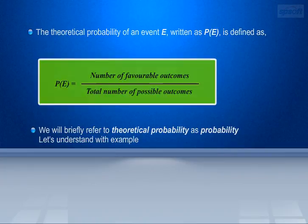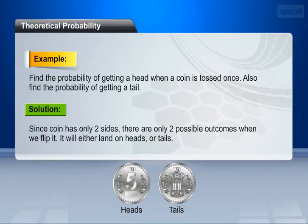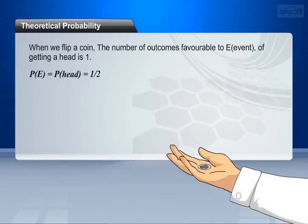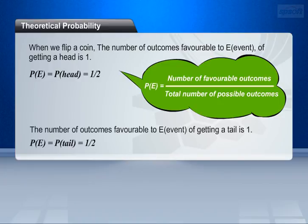Let's understand with an example. Find the probability of getting a head when a coin is tossed just once. Also find the probability of getting a tail. Since a coin has only two sides, there are only two possible outcomes when we flip it. The number of outcomes favorable to event E of getting a head is 1. So P(E) = P(head) = 1/2. Similarly, the number of outcomes favorable to getting a tail is 1, so P(E) = P(tail) = 1/2.